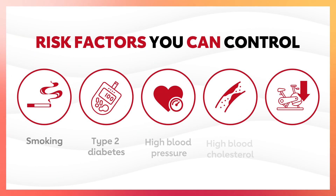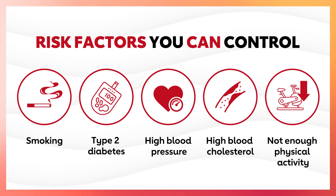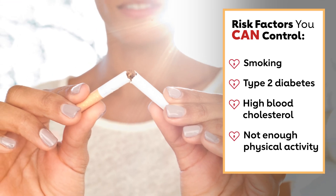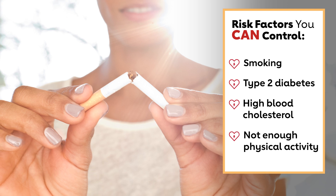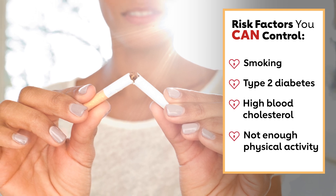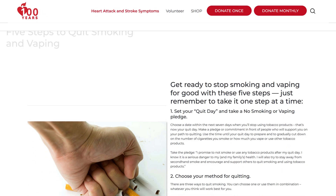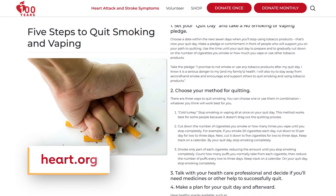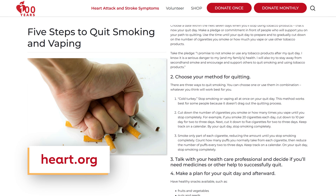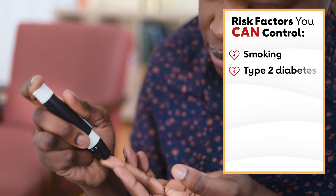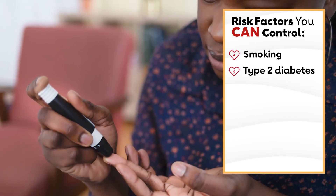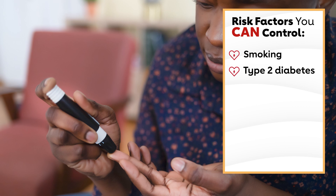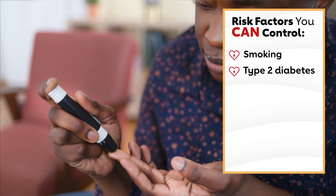But there are a number of PAD risk factors that can be controlled. Smoking — smokers may have almost three times the risk of PAD than non-smokers. If you smoke, now is a great time to quit and the AHA can help. Check out heart.org for resources. Type 2 diabetes: if you have diabetes, you're at greater risk of developing PAD as well as other cardiovascular diseases.